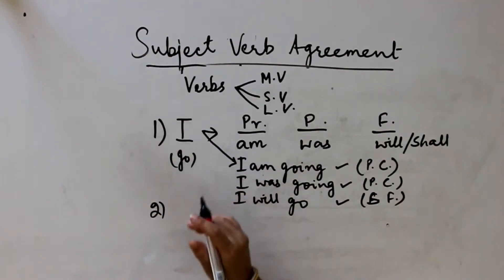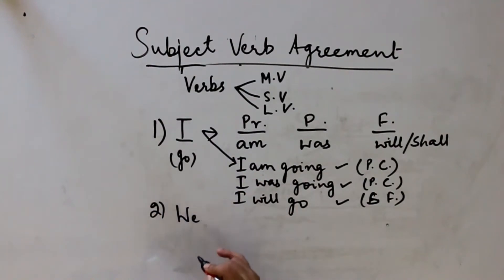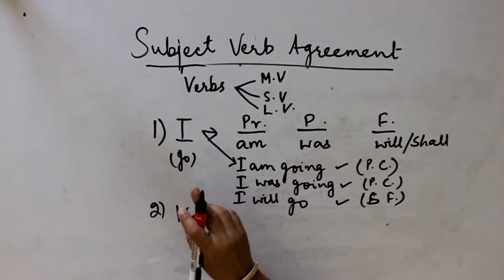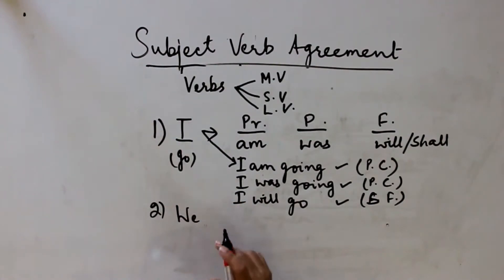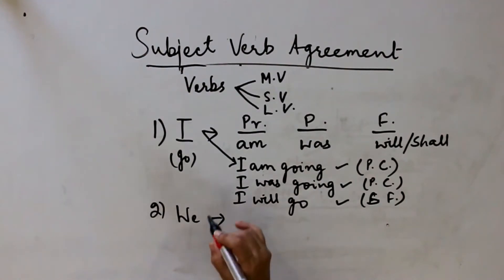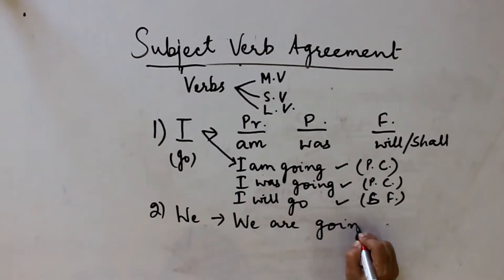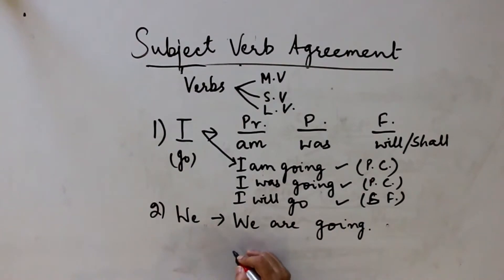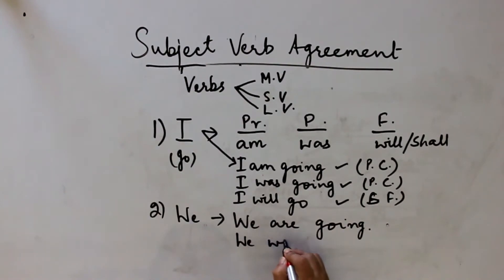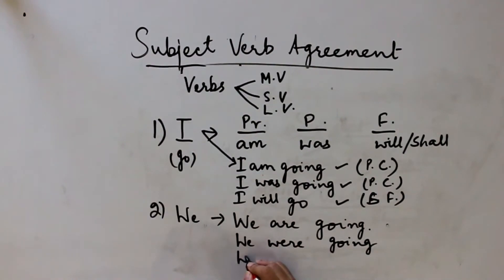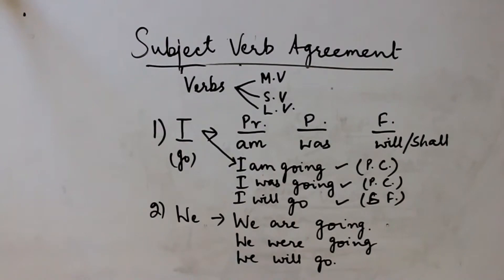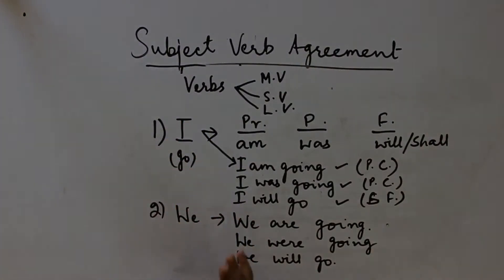Simply, if I take 'we' — the plural form of 'I' is 'we.' Here, if the main verb is again 'go,' then in present tense it will be 'we are going,' in past tense 'we were going,' and in future 'we will go.'